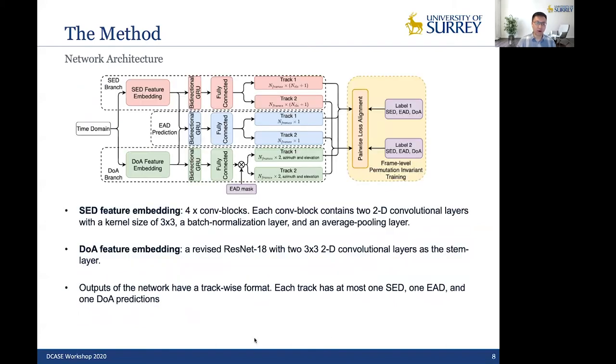Then this is our network architecture. We have basically three branches: SED branch, DOA branch, and EAD branch to unify the SED and DOA predictions. So for SED feature embedding, there are four conv blocks. Each conv block contains two 2D convolutional layers with a kernel size of 3x3 and a batch normalization layer and an averaging pooling layer. And for DOA feature embedding, we use a revised ResNet-18 with two 3x3 2D convolutional layers as a stem layer. And also the output format is trackwise.